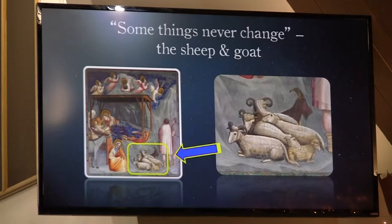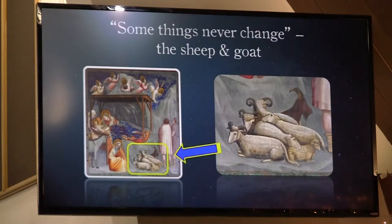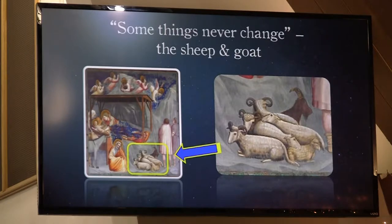We begin tonight with the notion that some things never change. When we compare what we had last week with what we have tonight, there are certain things Giotto puts in his piece of art that are very similar to what we saw last week. We start with the sheep and the goats. Just like in the image we had last week, Giotto has painted a small flock of sheep and also a goat. The sheep are facing the Christ child, and the goat — painted black in both images — is facing away from Christ. No small image of what Christ will grow up and talk about regarding the sheep and the goats.